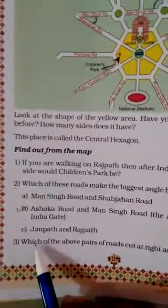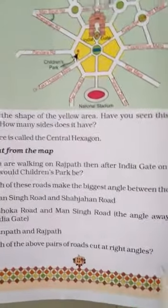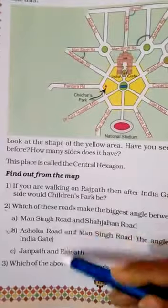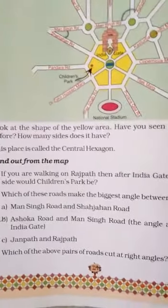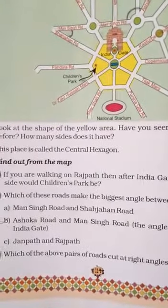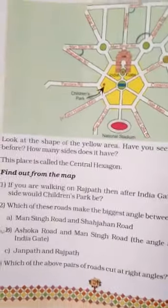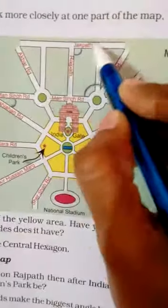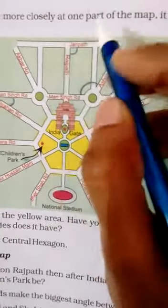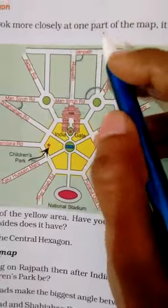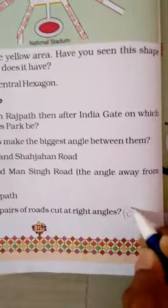Number 3: which of the above pairs of roads cut at right angles? We have seen the 3 angles. The right angle is made by option C. Here we will write C. Thank you.